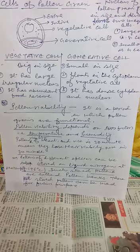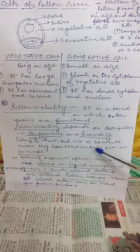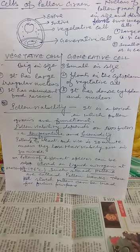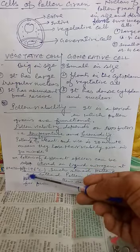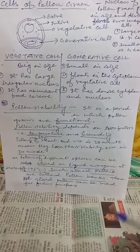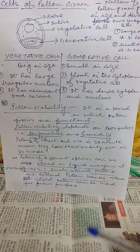For example, the pollen viability of wheat and rice is 30 minutes — they lose their viability within 30 minutes. Pollens of different species can be stored in liquid nitrogen for future use at a temperature of minus 196 degrees centigrade. Such stored pollens are called pollen banks, and these pollen banks can be used for future use.